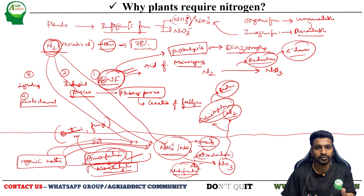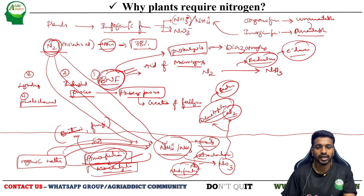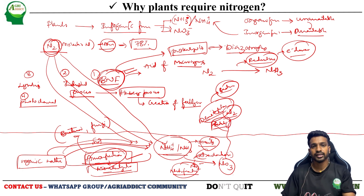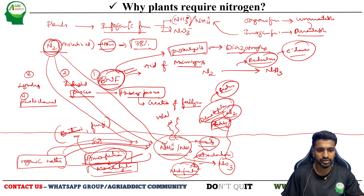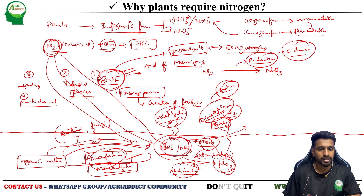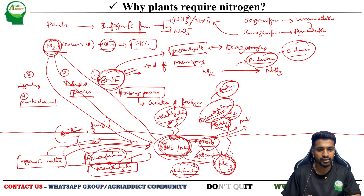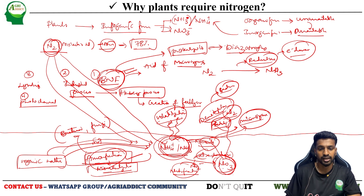Now, nitrate has been formed and is available for plants, but there is a problem. This nitrate can convert itself back into molecular nitrogen. The process of conversion of nitrate (the available form) back into the unavailable form (molecular nitrogen) is called denitrification. Denitrification is again a reduction process — carried out by certain bacteria. This is important to remember. Volatilization is the gaseous escape of ammonia into the atmosphere.